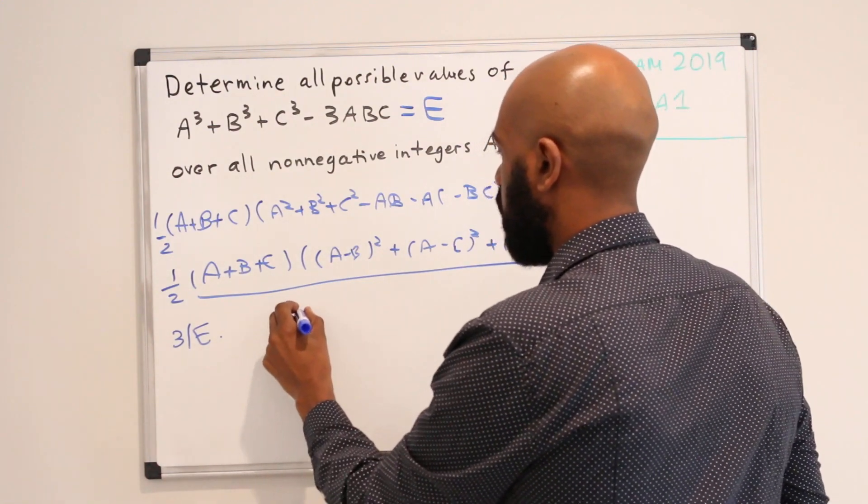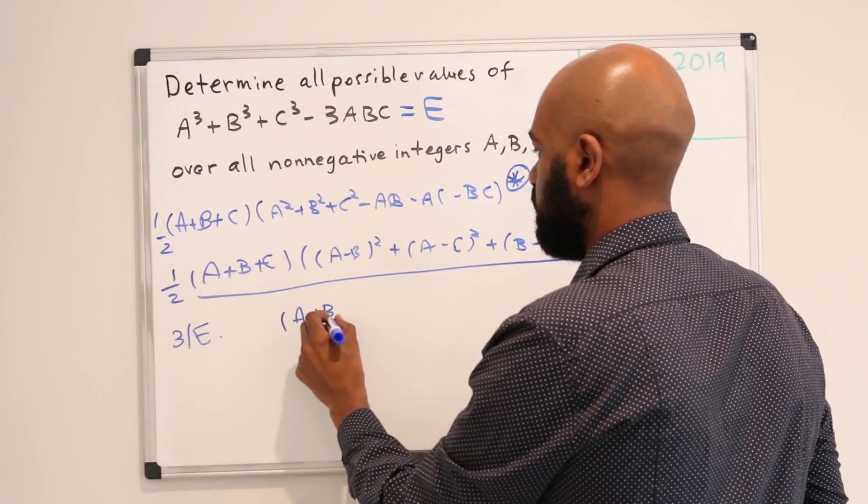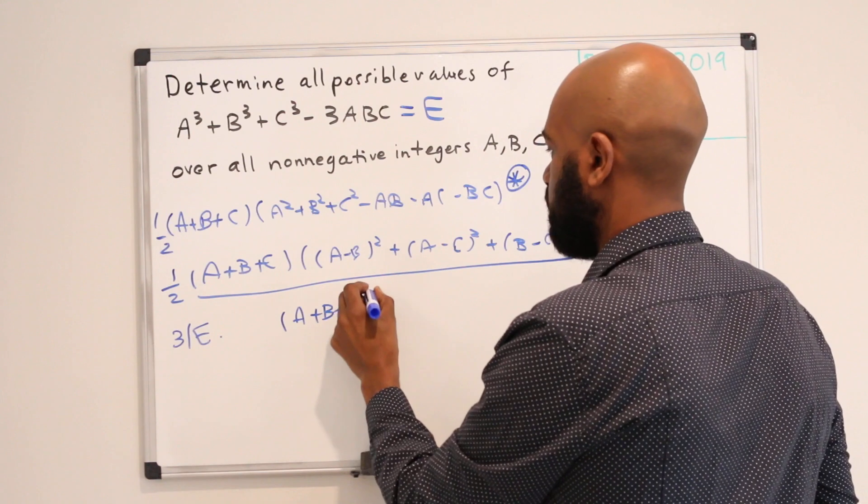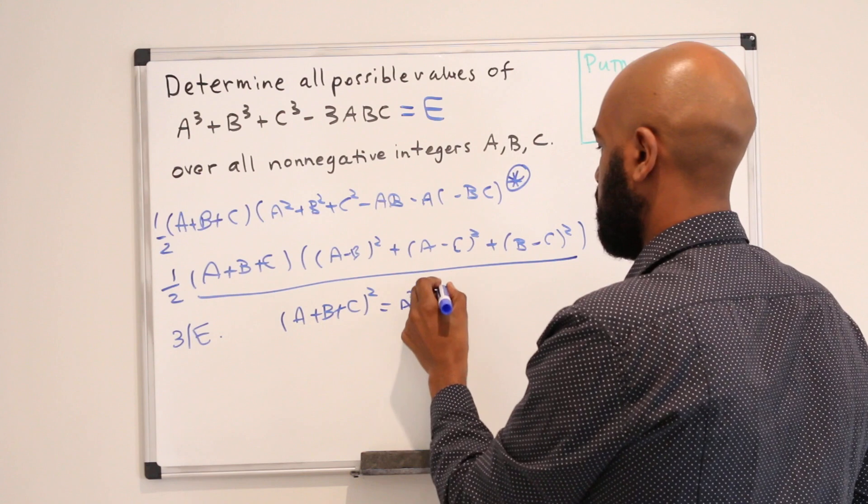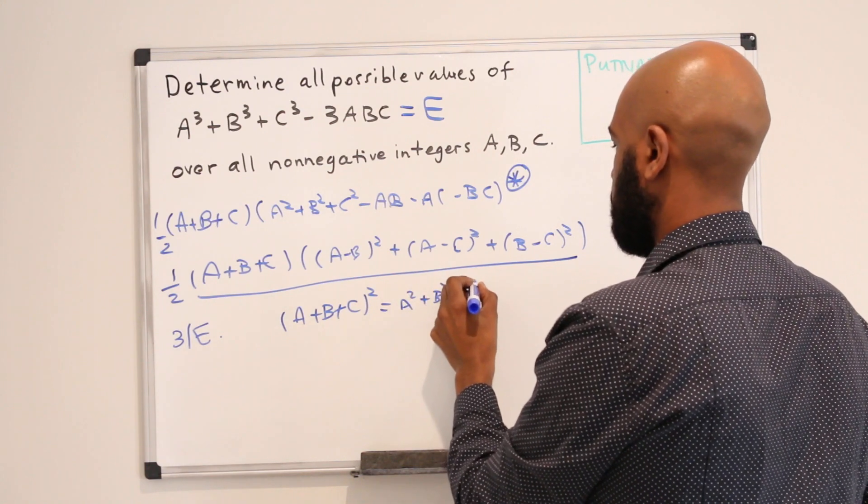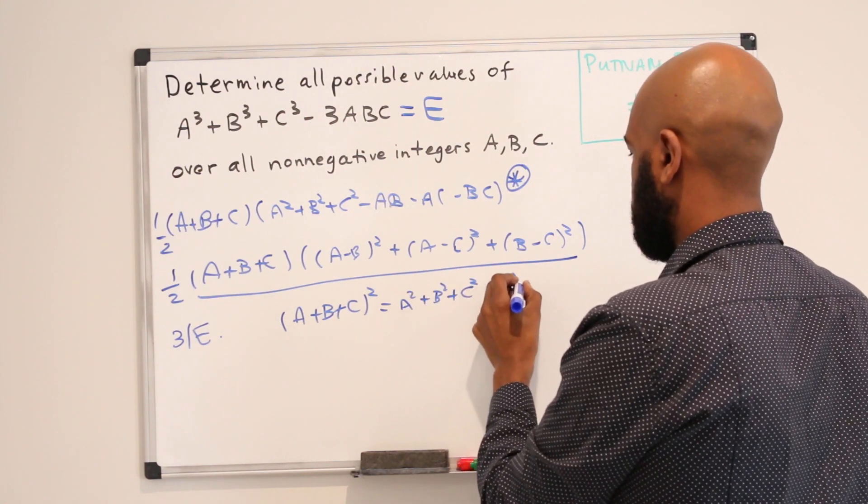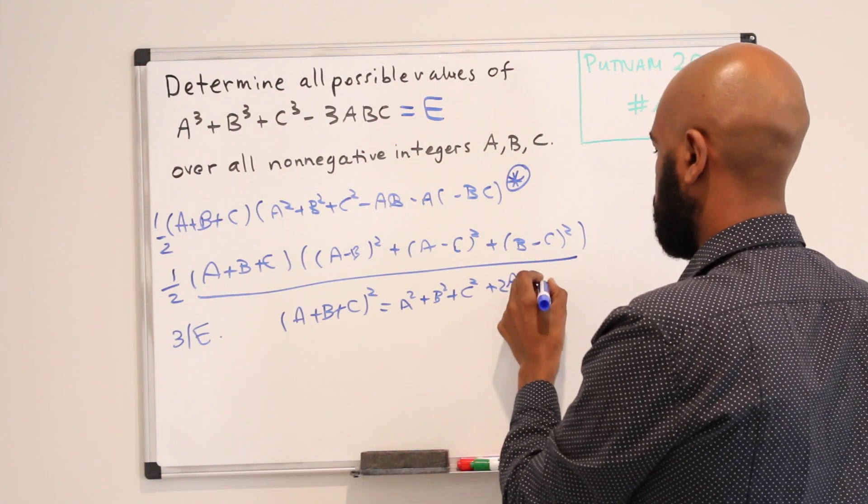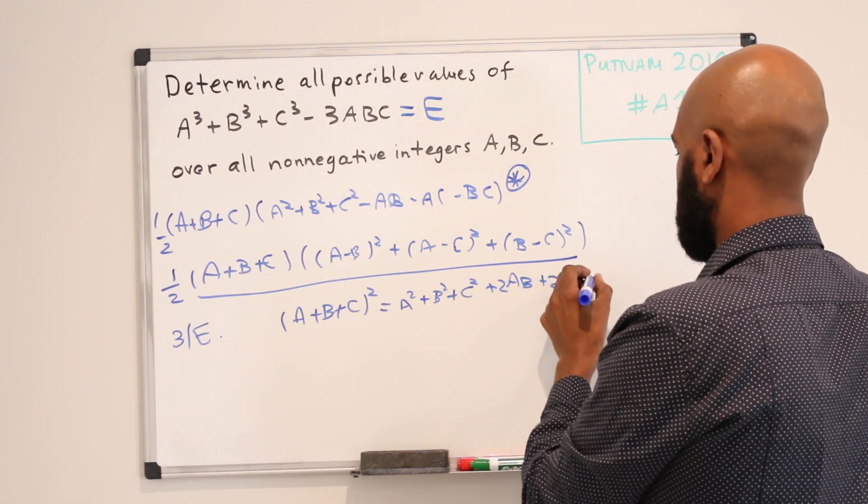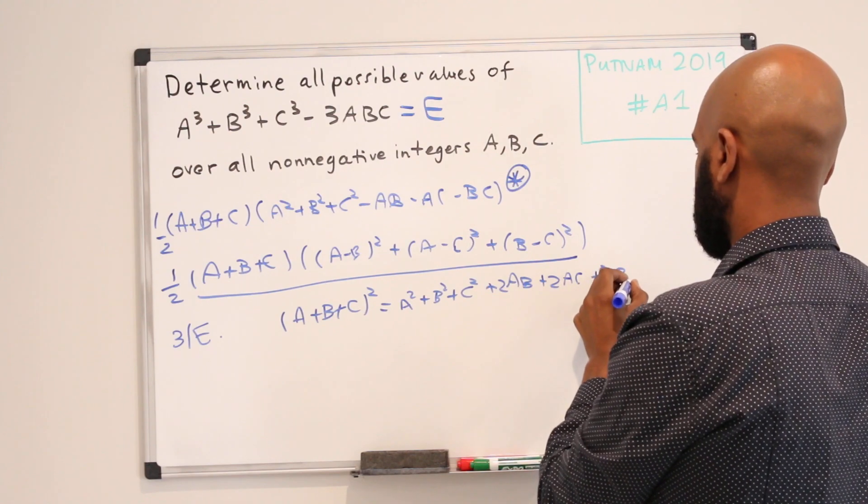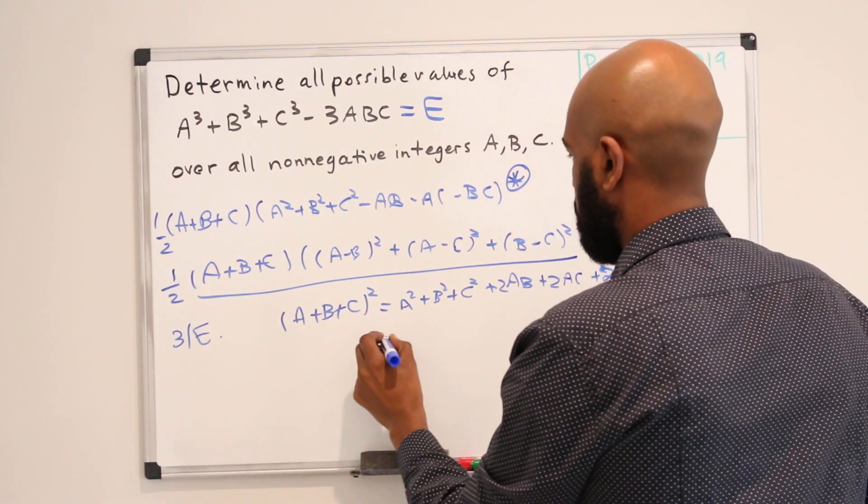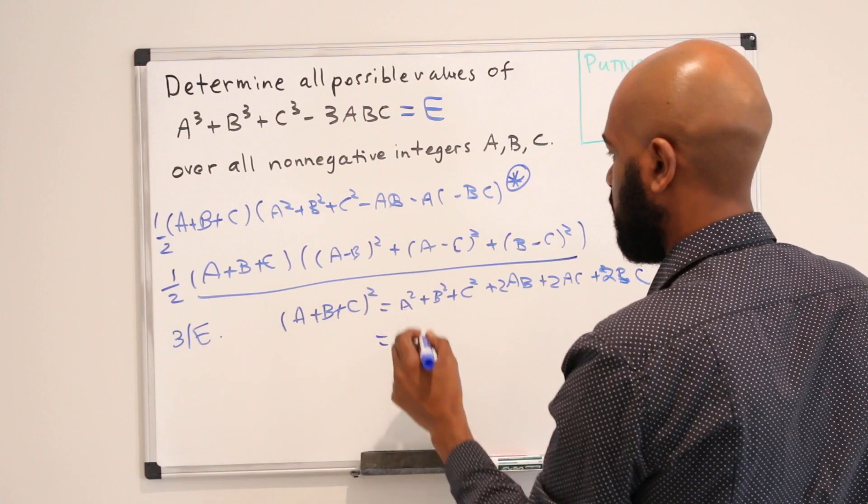So if you take the quantity (A + B + C) and you square it, you get A² + B² + C² + 2AB + 2AC + 2BC. Which is this expression right here,